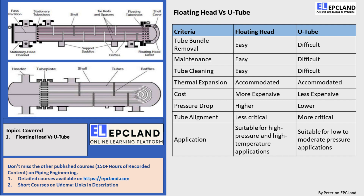Tube alignment — tube alignment is more critical in a U-tube heat exchanger compared to a floating head heat exchanger. Application — a floating head heat exchanger is suitable for high pressure and high temperature applications, while a U-tube heat exchanger is suitable for low to moderate pressure applications. So, there you have it! Now you know the differences between a floating head heat exchanger and a U-tube heat exchanger. I hope you found this information useful. Thanks for watching, and I'll see you in the next video!